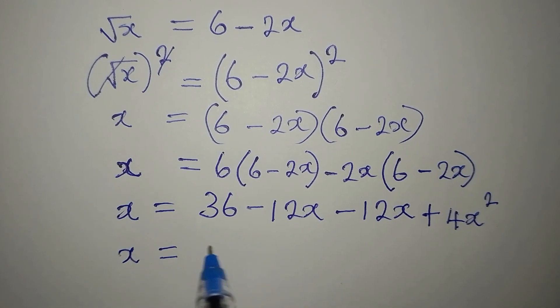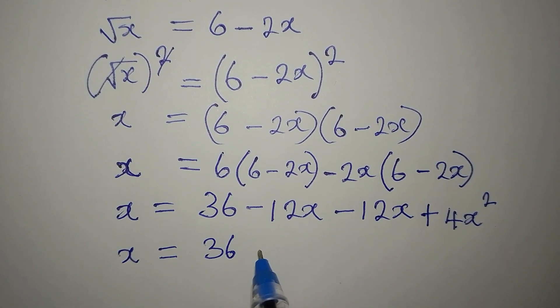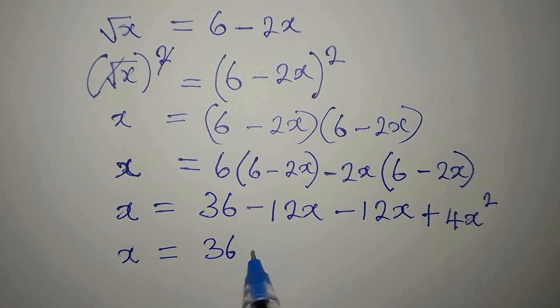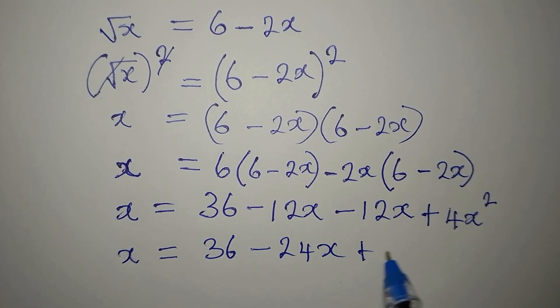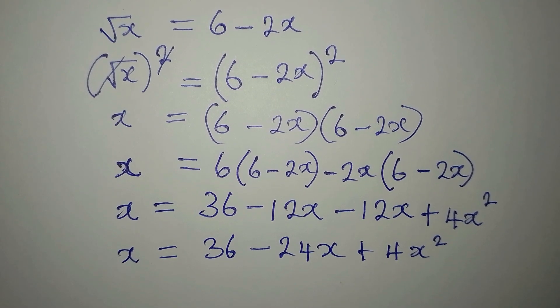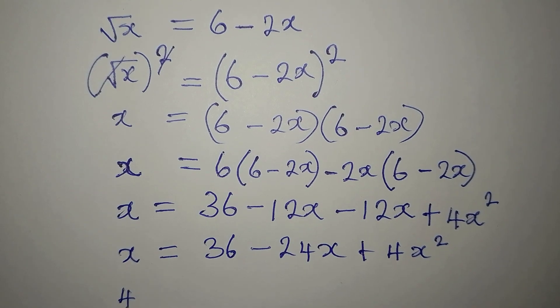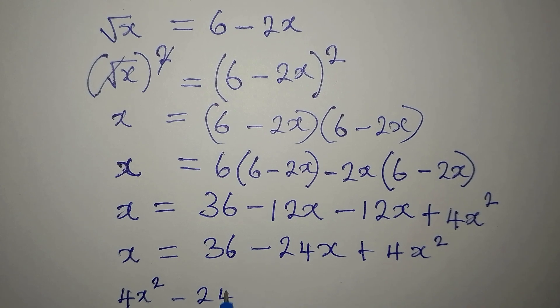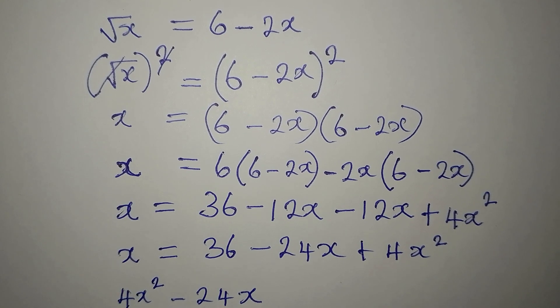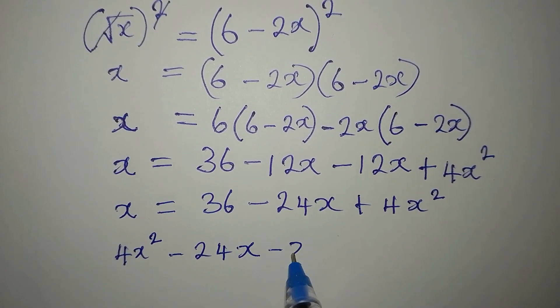So we have x. We have 36. Put these two together. You get minus 24x. Then plus 4x squared. Now let us rearrange this. The one with the highest power will appear first. We have 4x squared. This will come here to become minus x.